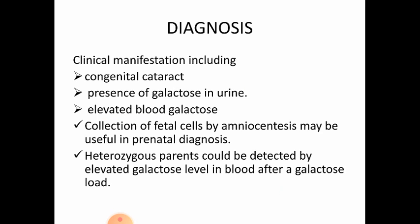Diagnosis includes clinical manifestations such as congenital cataract, presence of galactose in urine, and elevated blood galactose levels. Collection of fetal cells by amniocentesis may be useful for prenatal diagnosis. Heterozygous parents can be detected by elevated galactose levels in blood after a galactose load.